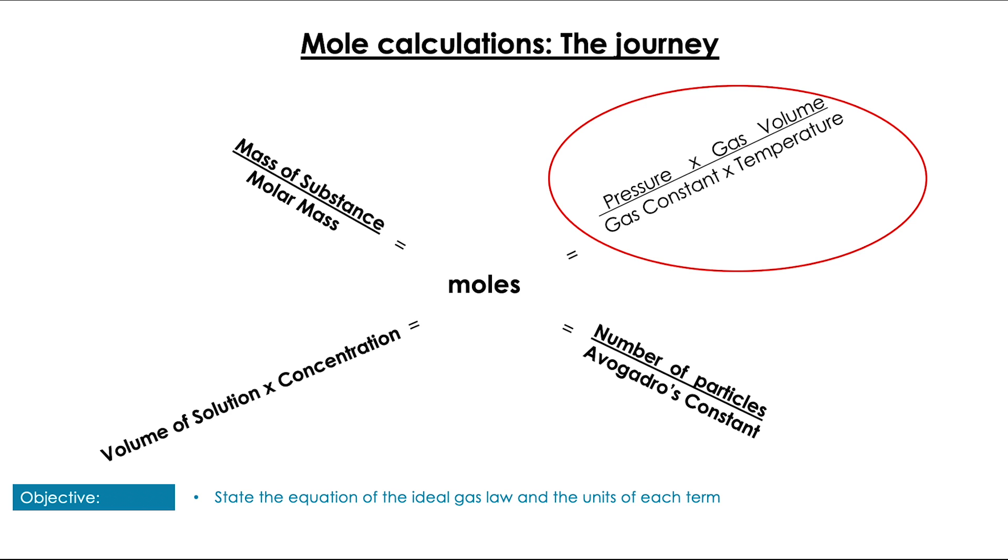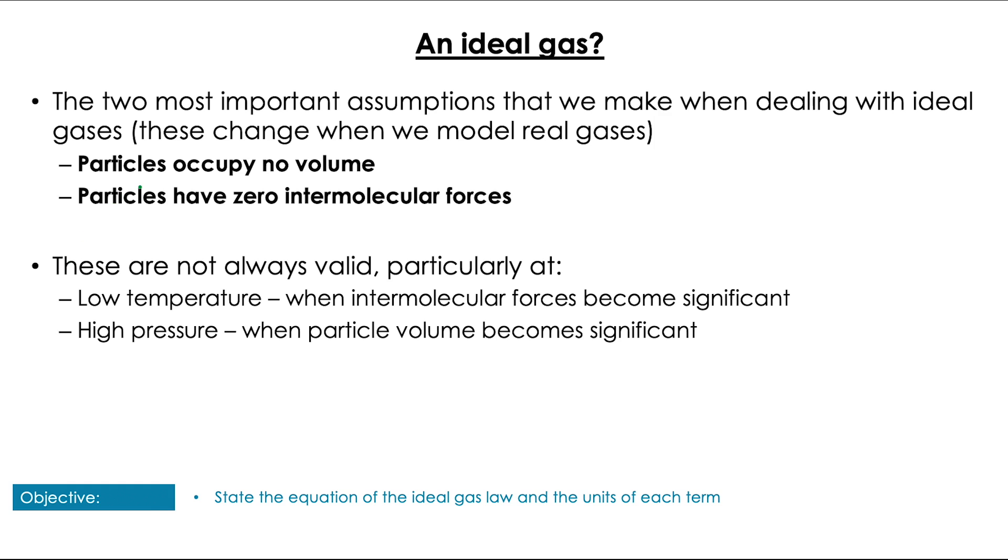Let's just quickly recap ideal gases and have a look at the equation. As discussed in the last video, ideal gases have particles that occupy no volume and have zero intermolecular forces. Now, this is not particularly valid in certain areas, such as low temperature and high pressure. And when we consider low temperature, this may make more sense because at a low temperature, particles are moving a lot more slowly. They're not whizzing past each other as quickly and so any interaction the molecules do have is going to become more significant.